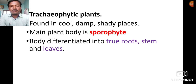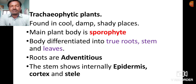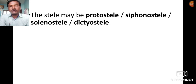In pteridophytes, the plant body is differentiated into true roots, true stem, and true leaves. The roots are adventitious roots. The stem shows internally epidermis, cortex, and stele. The stele may be protostele, siphonostele, solenostele, or dictyostele.